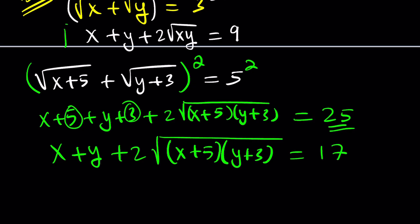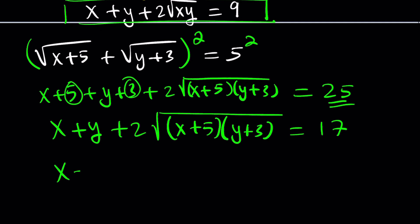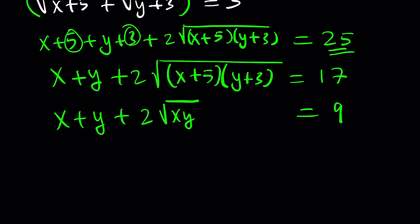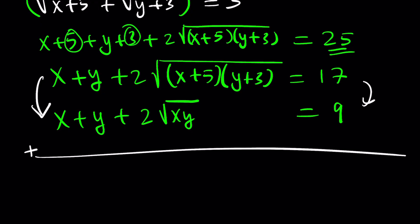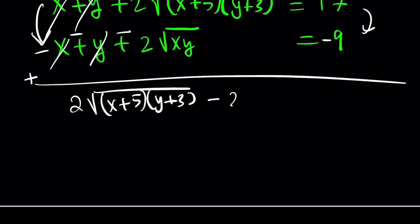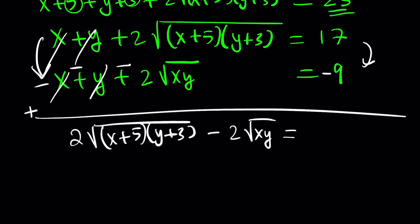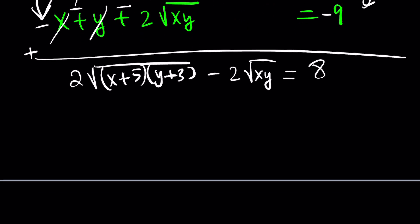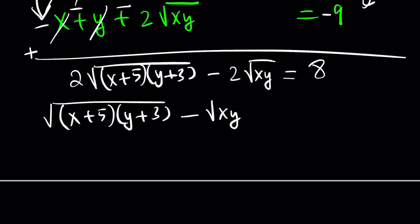Now we have a new system. The good thing is we can eliminate some terms by subtracting the equations. x and y cancel out, giving us 2 times the square root of (x+5)(y+3) minus 2 times the square root of xy equals 17 minus 9, which is 8. Dividing both sides by 2 gives the square root of (x+5)(y+3) minus the square root of xy equals 4.